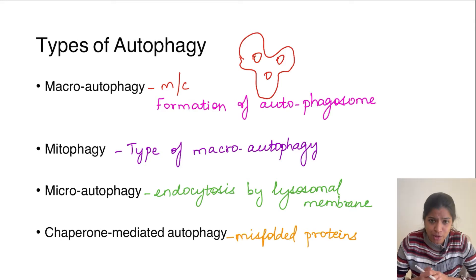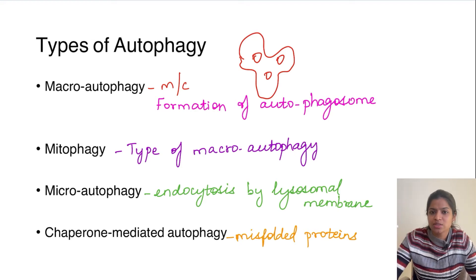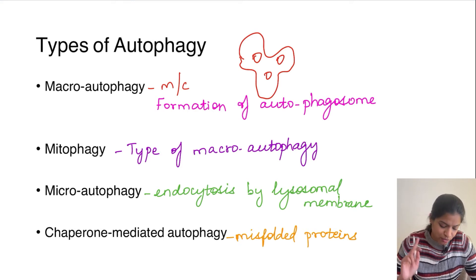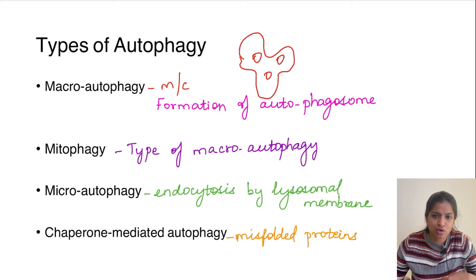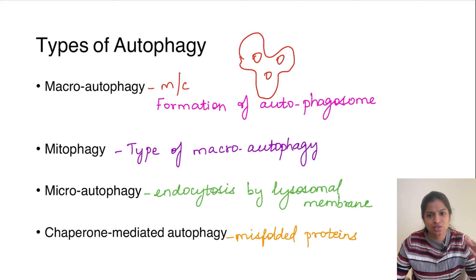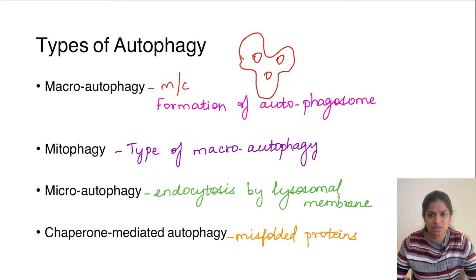Moving on to mitophagy — it is actually a type of macroautophagy only, but here the target organelle is the mitochondria. Around the mitochondria, an autophagosome is formed and the mitochondria gets degraded. The third type is microautophagy, wherein there is no autophagosome formation. Whatever organelle has to undergo degradation comes to the lysosomal membrane and there it undergoes endocytosis.